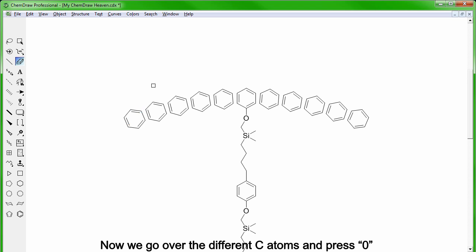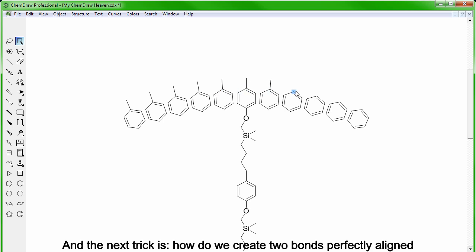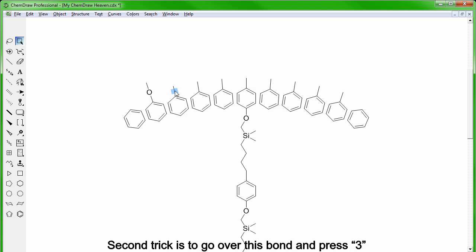Now we can go over the different carbon atoms and press 0 to get additional CC bonds. And the next trick is how do we create two bonds perfectly aligned no matter their orientation? First trick is go over one atom and press 8. What that will do is sprout three CC bonds at a 90 degrees angle relative to each other so that you can delete the two that you don't need and then simply press O to get the oxygen. Second trick is go over this bond and press 3 to get a triple bond. I know it doesn't look very nice, but it will disappear soon. Once there is a triple bond you can go over the carbon atom and press 0 which will sprout a CC bond at the expected 180 degrees angle. Then we simply switch back to a single bond by pressing 1 over the triple bond and then you add the oxygen by pressing O.